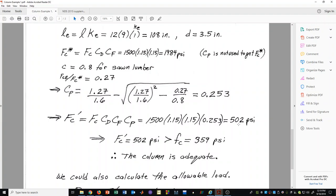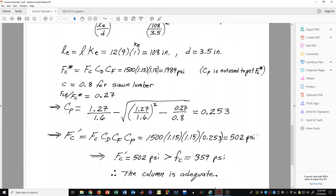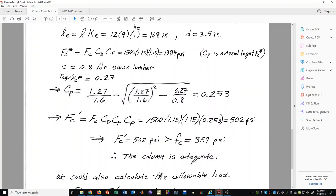Remember from the previous page, we found that our actual compressive stress was 359. So clearly, our allowable stress is greater than the actual stress and therefore the column is adequate.